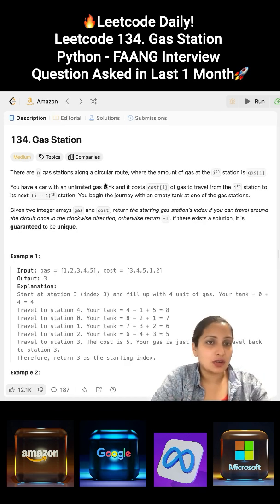Given N gas stations along a circular route, all gas stations have a certain amount of gas. At the i-th station you have a car with unlimited gas tank. You have a gas array and a cost array. Cost is the cost of gas to travel from the i-th station to i+1-th station. Return the starting gas station index such that you never run out of gas when traveling around the circuit once in the clockwise direction.